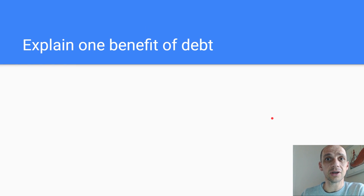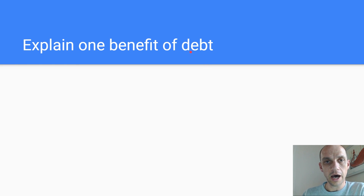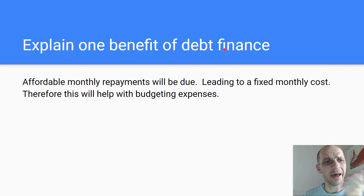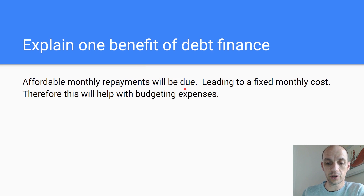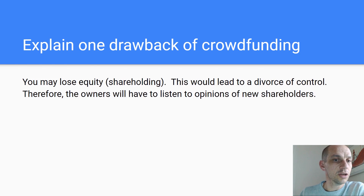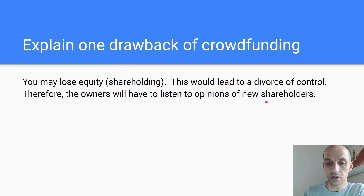Explain one benefit of debt: debt can be good — businesses know how to use debt to generate more income. Affordable monthly repayments will be due, leading to a fixed monthly cost. Therefore, this will help with budgeting expenses. Explain one drawback of crowdfunding: you may lose equity — shareholding — this would lead to a divorce of control. Therefore, the owners will have to listen to the opinions of new shareholders.